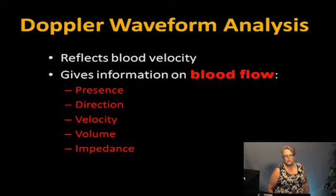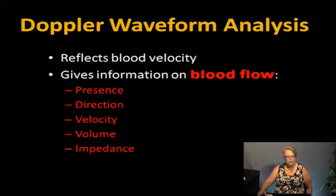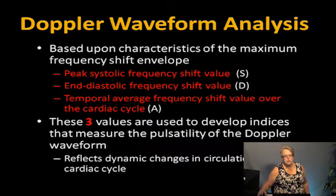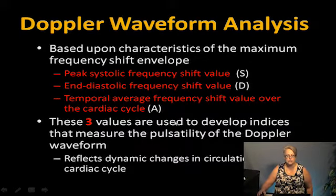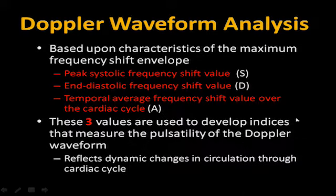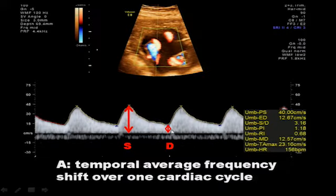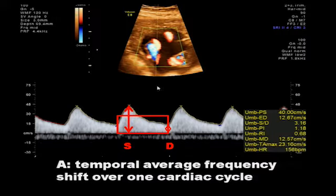The Doppler is going to reflect blood velocity. It gives information about blood flow: presence of flow, direction, velocity, volume, and impedance. All of this is based on the characteristics of the maximum frequency shifts in the envelope. We're looking at the peak — highest systolic value — end diastole (D), and the temporal average frequency (A). These three values are used to develop the indices we measure: the pulsatility of the Doppler waveform, reflecting your dynamic change in circulation through a cardiac cycle.